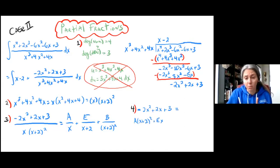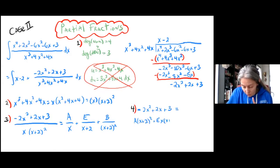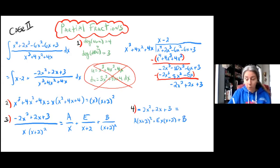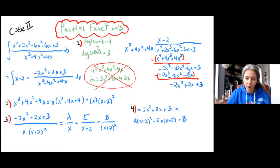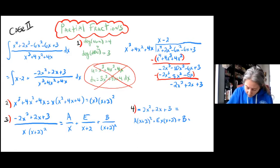Only one of the (x plus 2)'s cancel out, so we have E times x times (x plus 2). Both of the (x plus 2)'s cancel from the B term — so (x plus 2) squared is gone and we just have B times x left over.